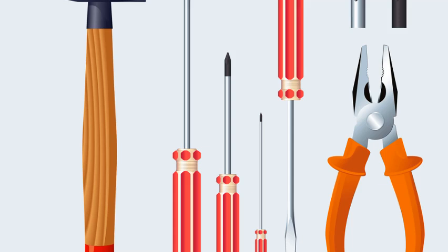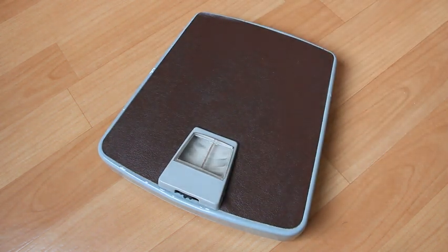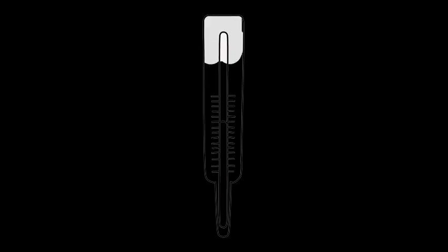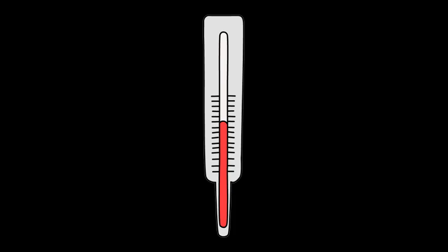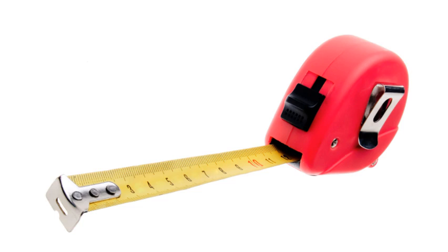People use different tools depending on your profession, what you do for work, or what you do at home. We might use a hammer for building something, a scale to help us know how much we weigh at the doctor's office or at home, a thermometer to tell our body temperature or how hot or cold it is outside, measuring spoons when baking, and measuring tape to decide how big a rug is.